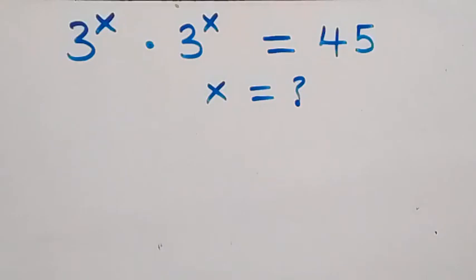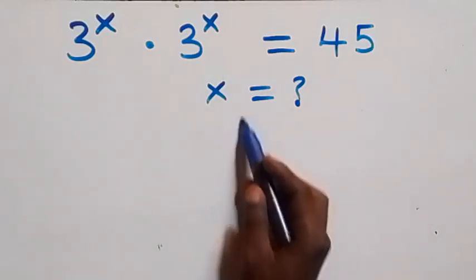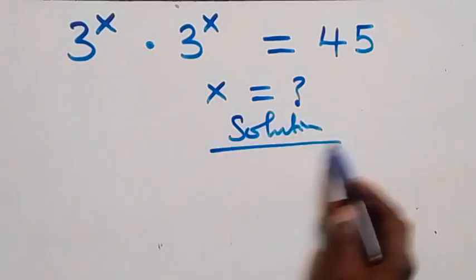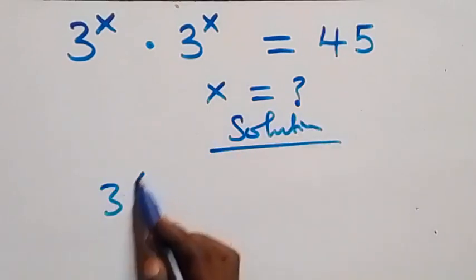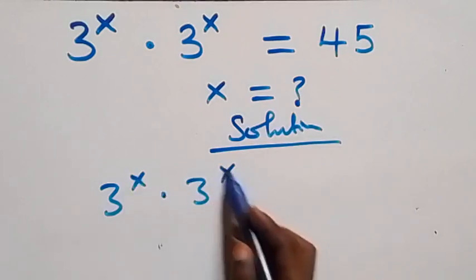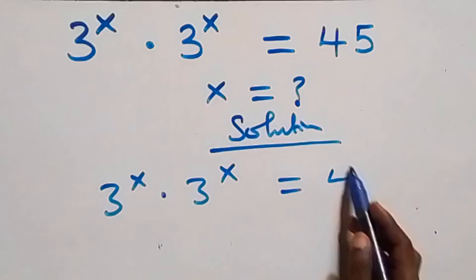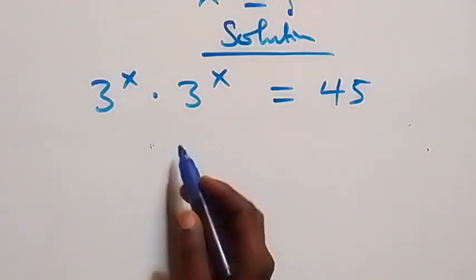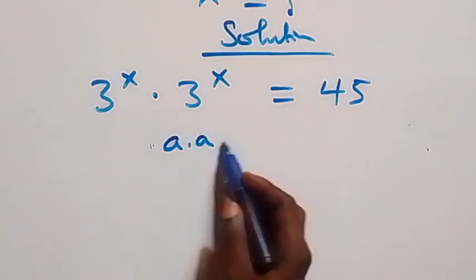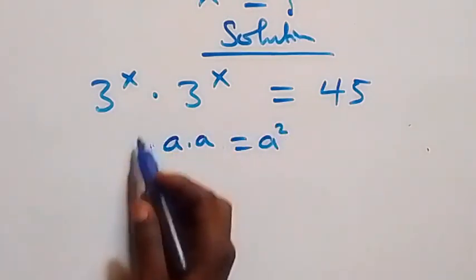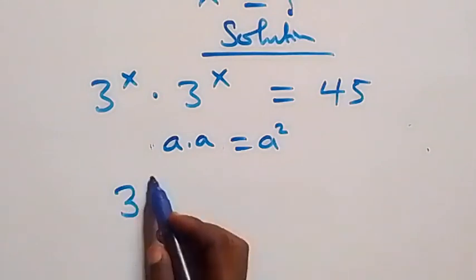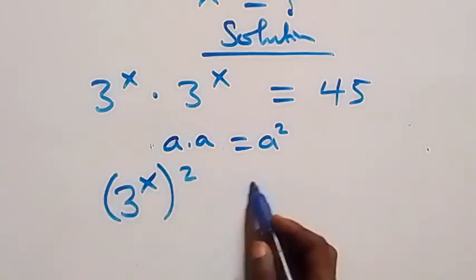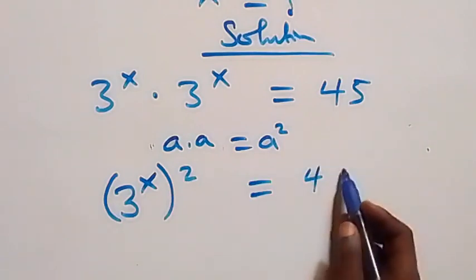Hello, you are welcome. We will solve this exponential equation. What we have here is 3 raised to power x times 3 raised to power x equals 45. Since we have a times a which we can write as a squared, we can write this as 3 raised to power x, all squared, equals 45.